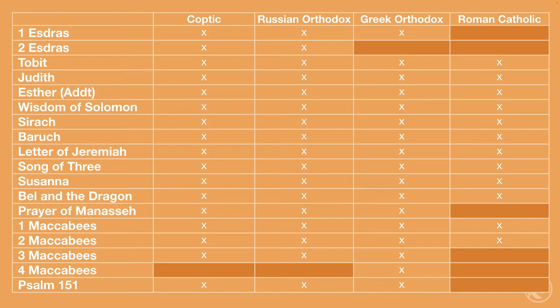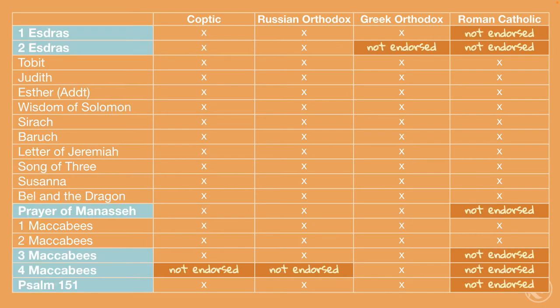I started mapping the books out based on which religions accepted them. The Roman Catholic Bible did not include 1st or 2nd Esdras, did not include the Prayer of Manasseh, and did not include the later Maccabees or Psalm 151. Greek Orthodox also did not include 2nd Esdras, and the Coptic and Russian Orthodox did not include 4th Maccabees. I'm most interested in the books not endorsed by the Roman Catholic Church — they wouldn't have invented them and then excluded them from their own Bible. So I started looking at 1st and 2nd Esdras, Manasseh, Maccabees, and Psalm 151.